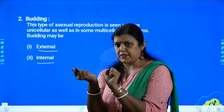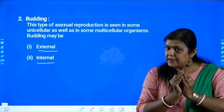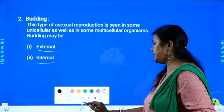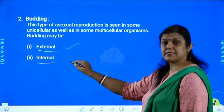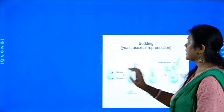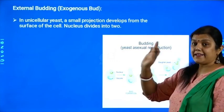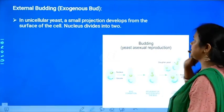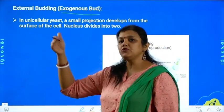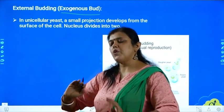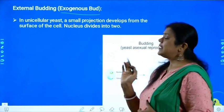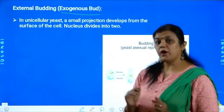Let us understand different types of budding in detail. External budding is also called exogenous bud — the bud which is formed outside the body of the organism is called an exogenous bud. This is basically seen in yeast. I hope you all know what yeast is — the baker's yeast — it is a very common and very useful microorganism. Yeast reproduces by budding.